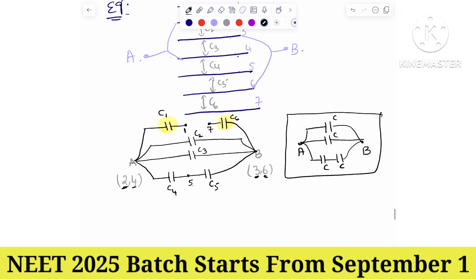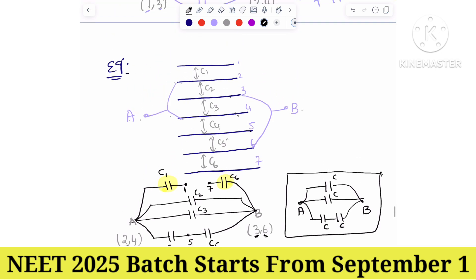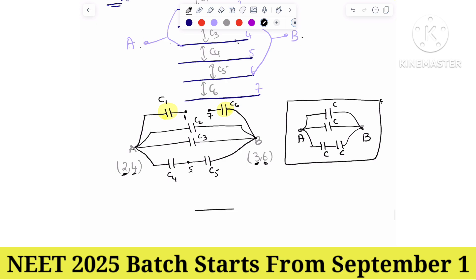Sometimes the problem won't mention equally spaced plates. If the separation is different, find the individual capacitances accordingly, and then solve. For more applications like this, join our telegram group. Thank you.